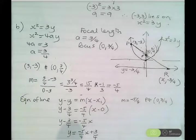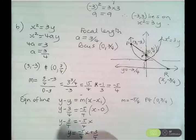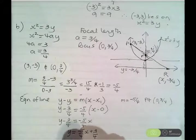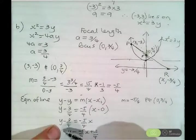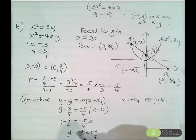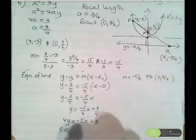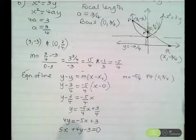Using the point-gradient formula with point (0, 3 quarters) and gradient negative 5 over 4: y minus 3 quarters equals negative 5 over 4 times x. Multiplying both sides by 4 and rearranging to general form gives 5x plus 4y minus 3 equals 0. That's the equation of the line through P and the focus.